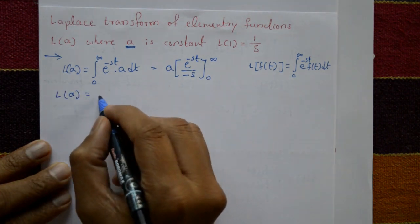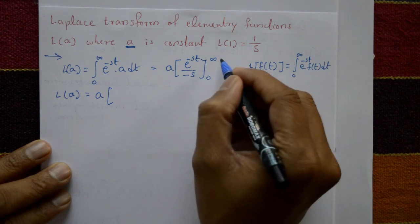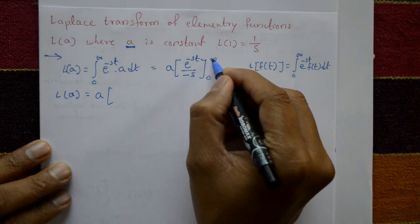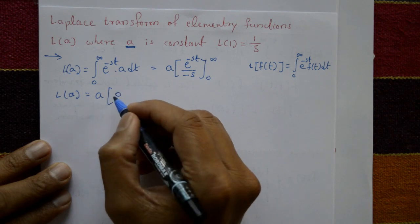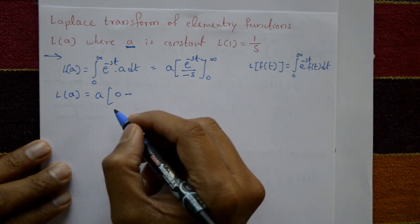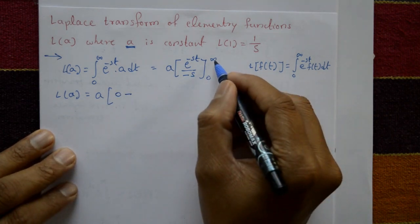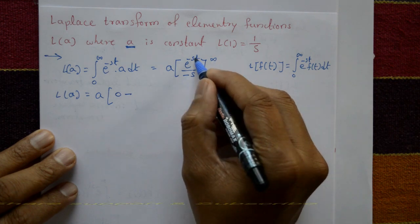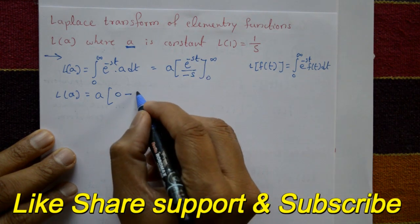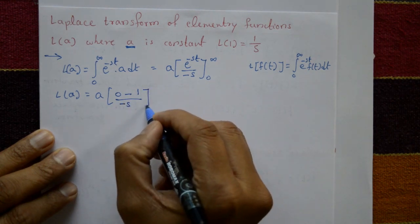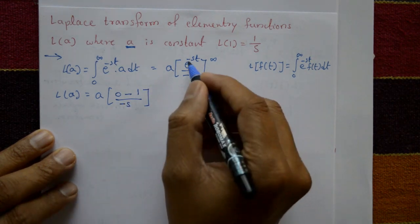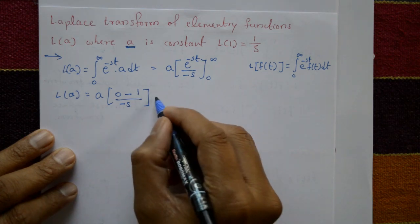Now L of a is equal to a times: first apply limit t equals infinity, e raised to infinity means 0, minus when t is equal to 0, e raised to 0 is 1, and this constant minus s.